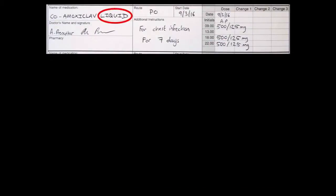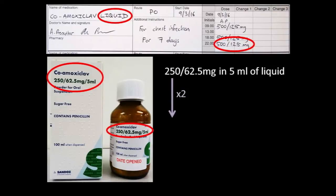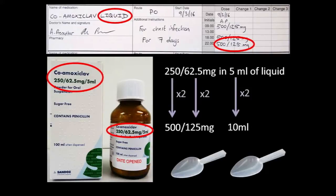Things are a little bit more complicated with prescriptions for the liquid. Here we have a prescription for 500/125 milligrams of the liquid. Remember that the liquid has 250 milligrams of amoxicillin and 62.5 milligrams of clavulanic acid in every 5 millilitres. If you multiply the 250 milligrams of amoxicillin by 2 you get 500, and multiplying 62.5 milligrams of clavulanic acid by 2 gives 125 milligrams. So to get the right dose you multiply the volume by 2 as well, giving 10 millilitres - two 5 millilitre spoonfuls.